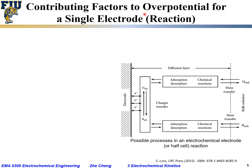With the concept of overpotential, we said it's a difference between the actual potential for an electrode reaction to occur versus the equilibrium potential for that electrode reaction. Now let's look at what are the contributing factors to the overall overpotential for a single electrode reaction.